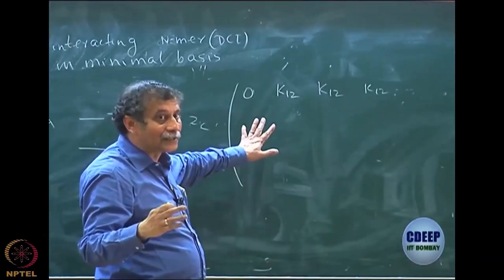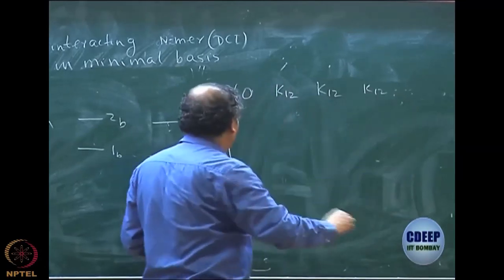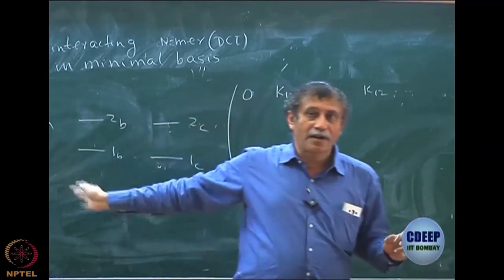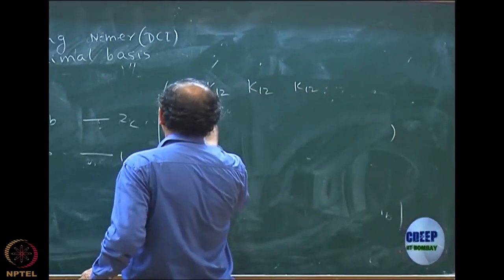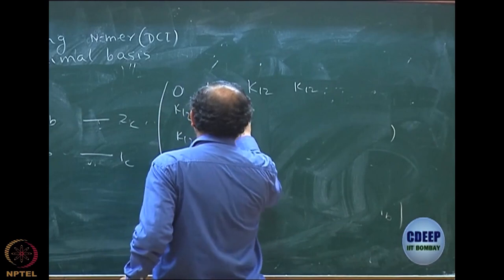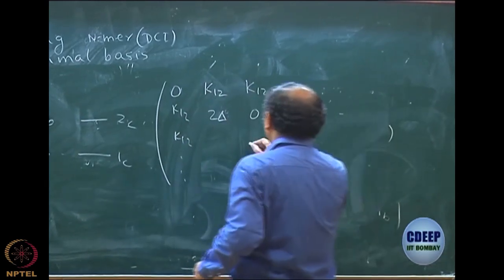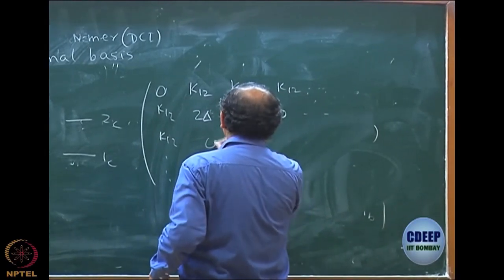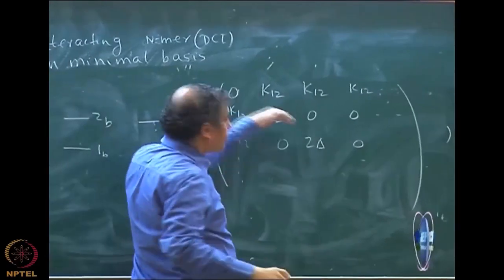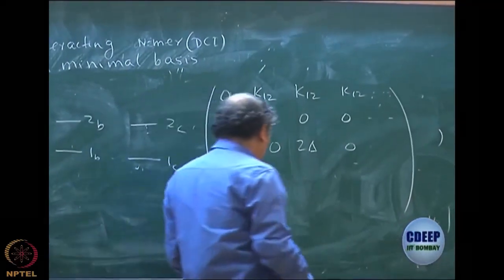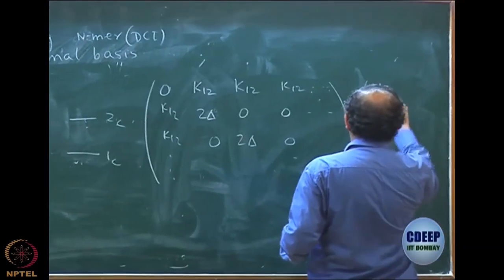Note that I am doing a doubly-excited CI for the n-mer. So I do not have anything else — I do not have Hartree-Fock to quadruples. Here only doubles are there. So I will have similarly K₁₂, K₁₂, etc. And then you have 2δ on the diagonal, and then for one double, another double — everything else is zero. The diagonals will all become 2δ except the first one which is 0.